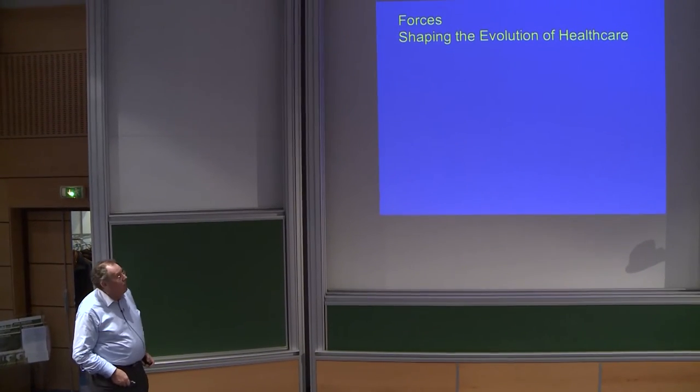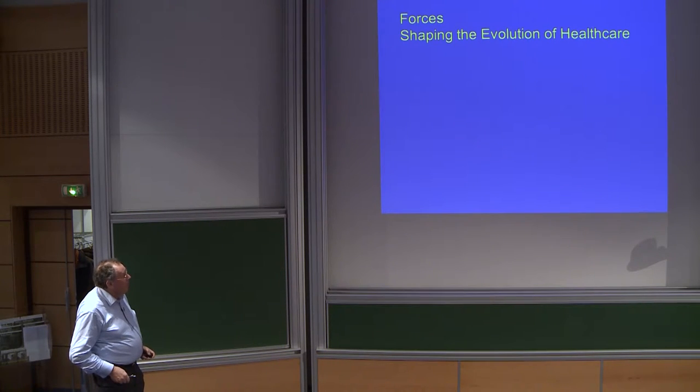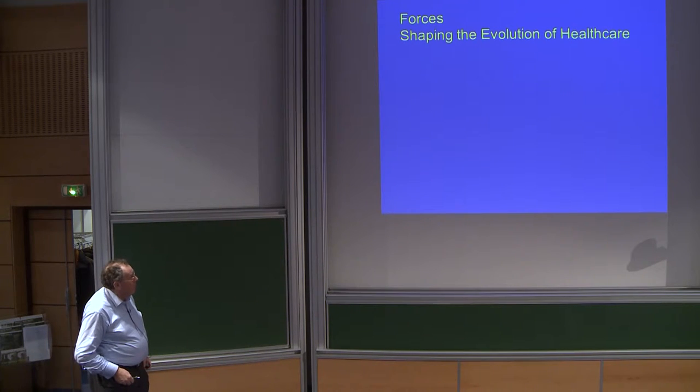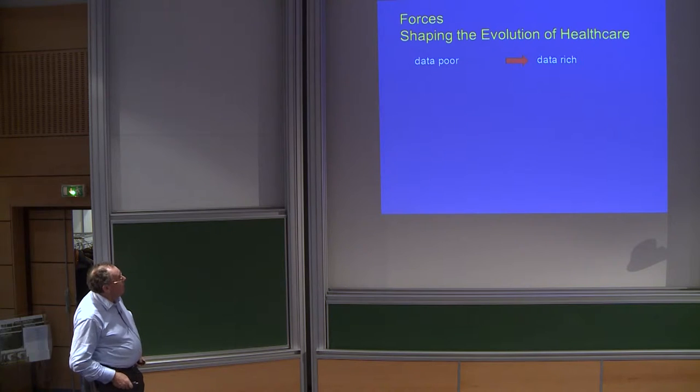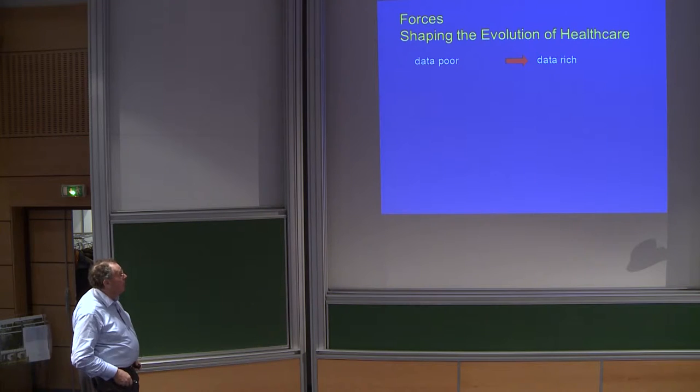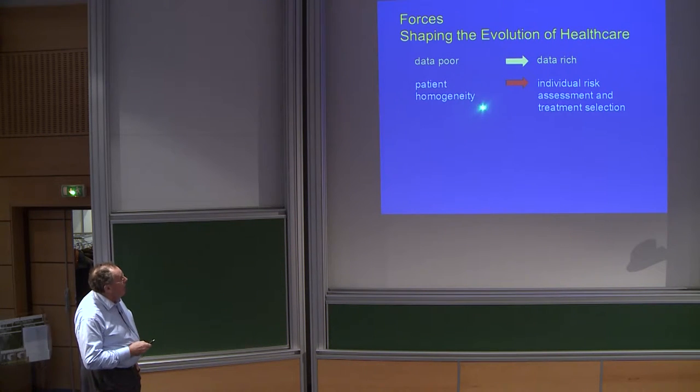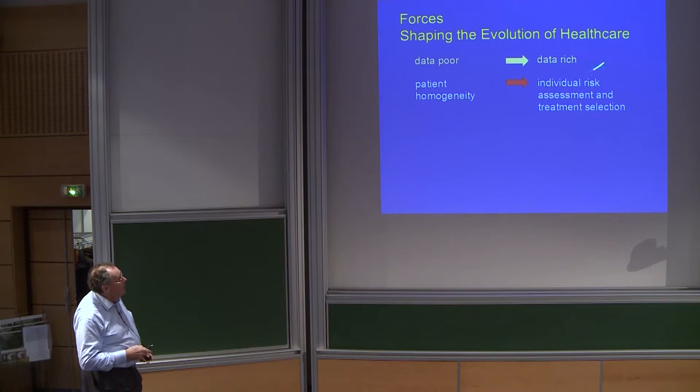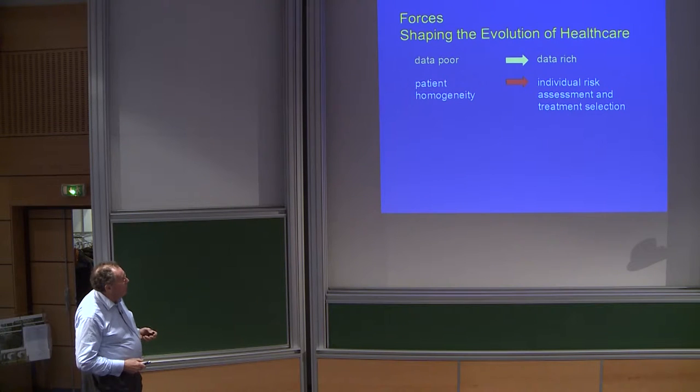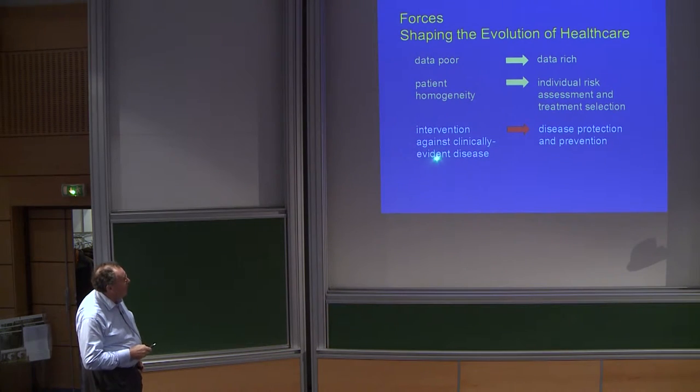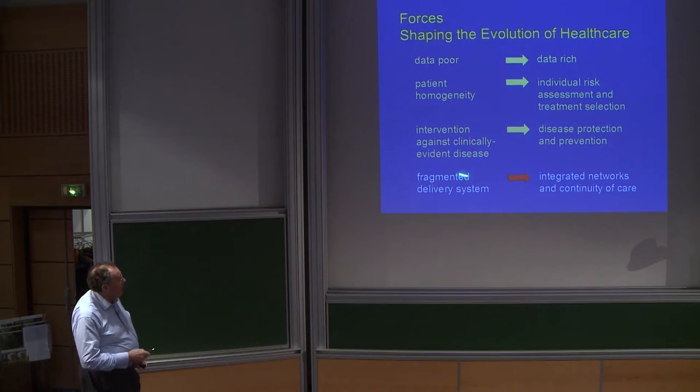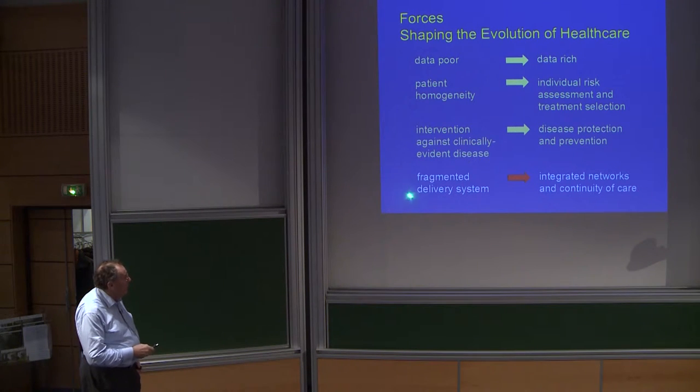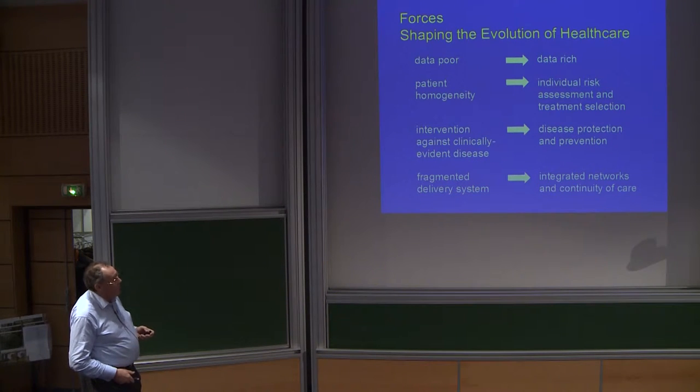I wanted to start by talking about shaping the evolution of healthcare. There are a number of changes which have occurred in terms of healthcare over the last 20 or 30 years. We've moved from data poor to data rich, from patient homogeneity to individual risk assessment and treatment selection, from intervention against clinically evident disease to disease protection and prevention, and in many advanced countries from a fragmented delivery system to integrated networks and continuity of care.